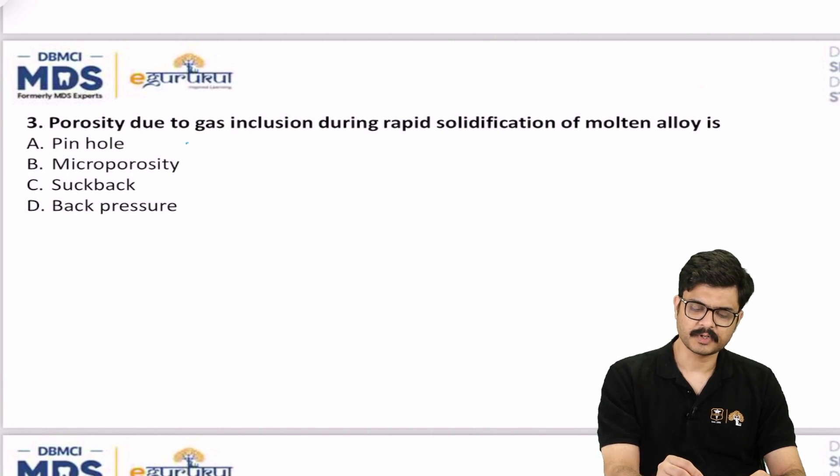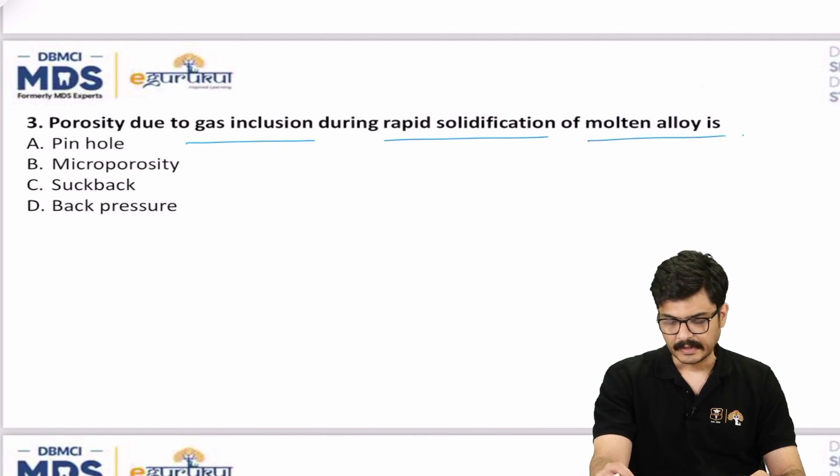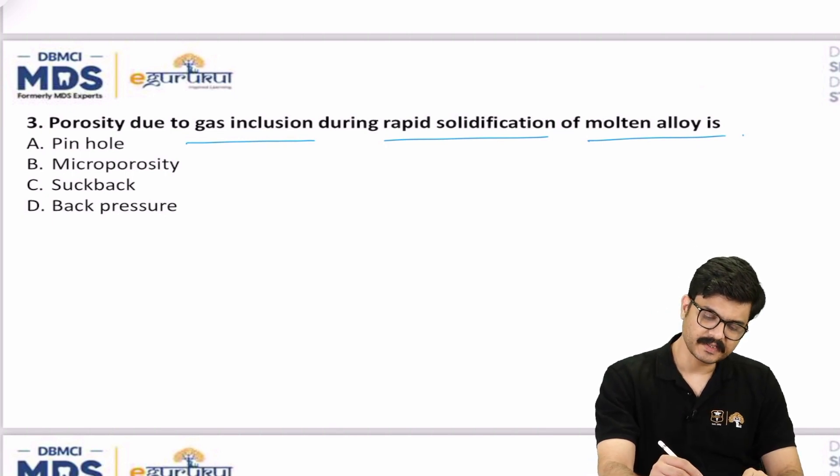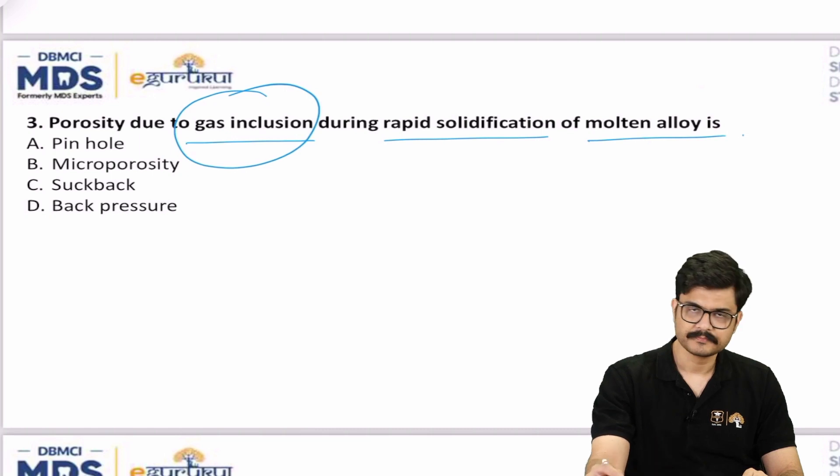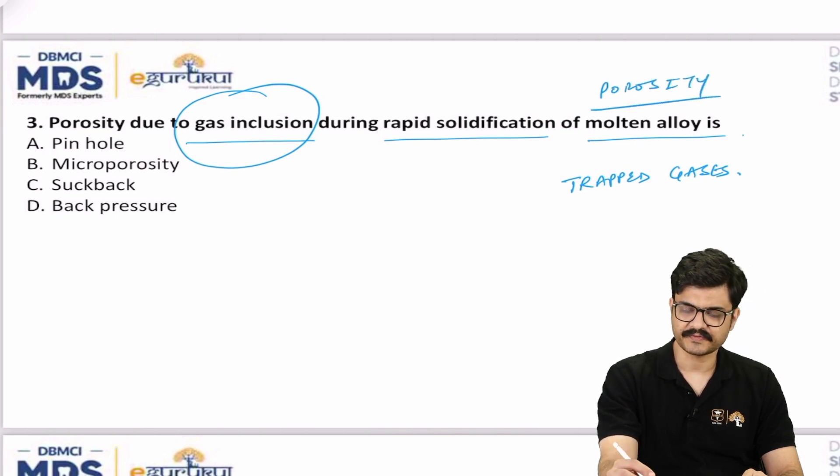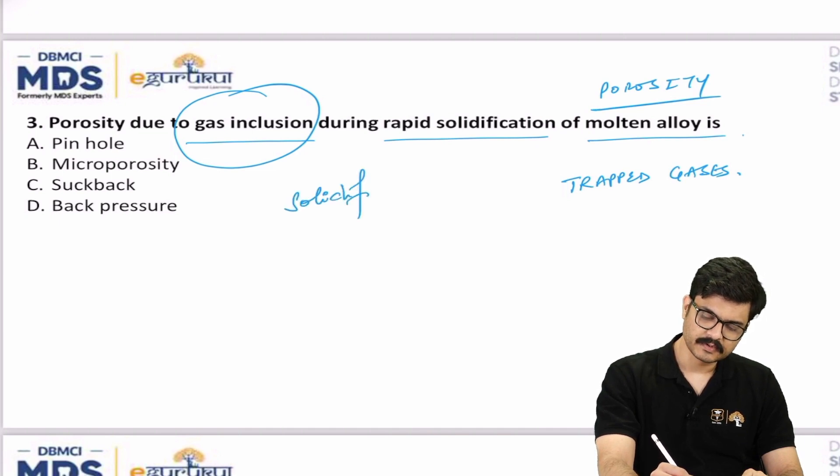Third question: Porosity due to gas inclusion during rapid solidification of molten alloy. The moment you see the term gas inclusion, you have to go to the classification of trapped gases. I always discuss porosity in both my routine lectures, recordings, as well as rapid revision. Porosity is basically due to two problems: one is during problems due to solidification, solidification problems or solidification defects.